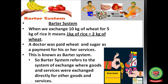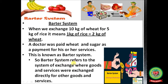The barter system means when there is no role of money in the economy — only goods are exchanged for other goods. For example, one person has apples and wants bananas, while another has bananas and wants apples, so they exchange. Similarly, one person has a basket of fruits and another has a hen and they exchange. When 10 kg of wheat is exchanged for 5 kg of rice, 1 kg of rice equals 2 kg of wheat. A doctor was paid wheat and sugar as payment for services. Barter system refers to the direct exchange of goods and services for other goods and services.